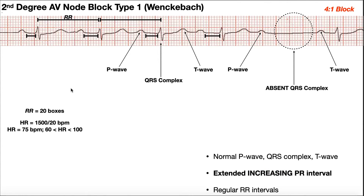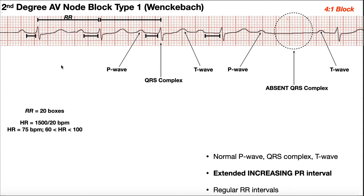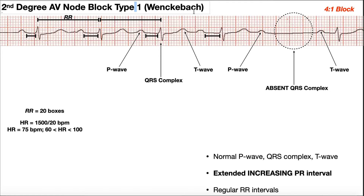To reiterate: when comparing each PR interval to the successive one it can be a little difficult to tell, so compare the first one to the last one before the QRS is dropped. If the first one is noticeably shorter, you can say it's an increasing PR interval and it's type 1.